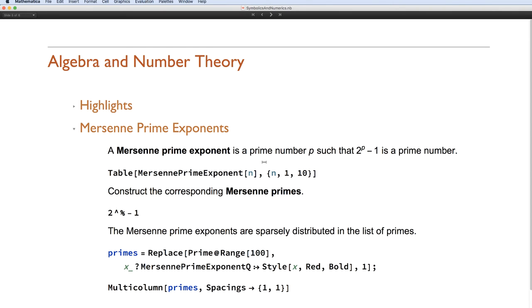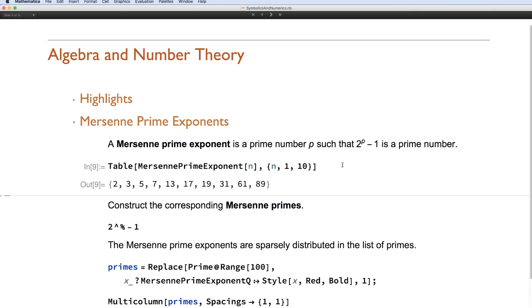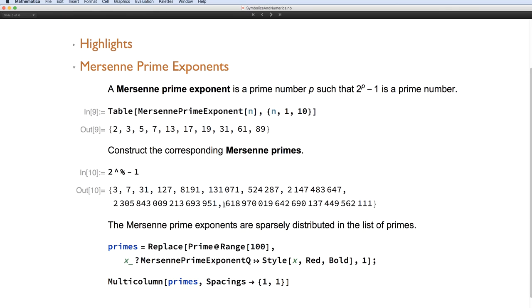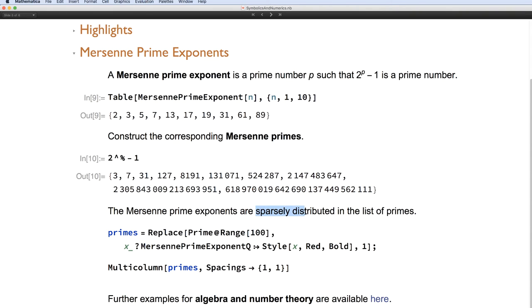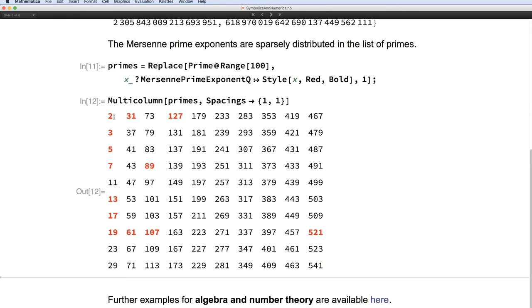So for Mersenne prime exponents, here's an example. So a Mersenne prime exponent basically is a prime p, so it must be a prime itself, such that 2 raised to p minus 1 is also a prime number. So for example, if p is 2, then 2 squared is 4 and 4 minus 1 is 3, that's a prime number. So here are the first few Mersenne prime exponents. Once you've got the exponents, you can work out the primes themselves. Some of them are quite large. And the point is that these prime exponents are actually quite sparsely distributed in the list of primes. So here's a graphic which shows that. And you can see quite clearly that the red entries are the Mersenne prime exponents. And they become very sparse as you go down the list.